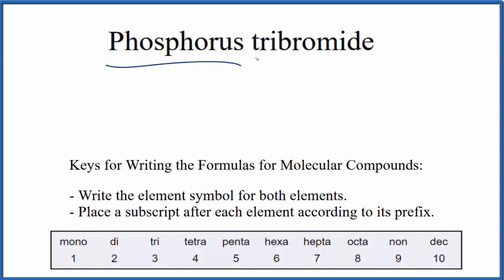To write the formula for phosphorus tribromide, we first have to determine what type of compound we have.